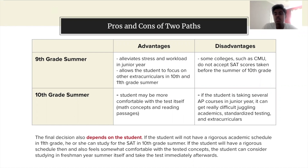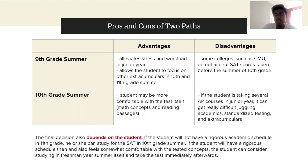One disadvantage is that some colleges — an example being CMU — do not accept SAT scores taken before the summer of 10th grade. So if you're applying to CMU and they still require SAT or ACT scores and don't allow anything before the summer of 10th grade, you won't be able to apply if you don't take the standardized test again. But that only applies to a certain set of schools.